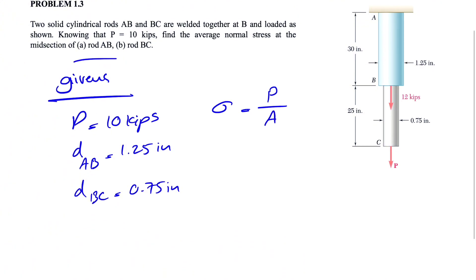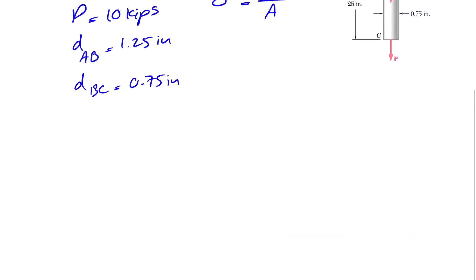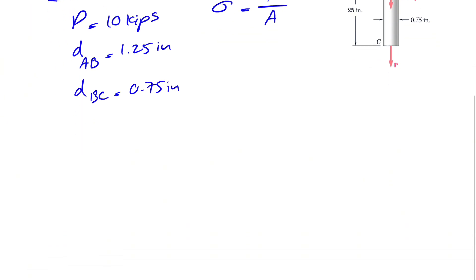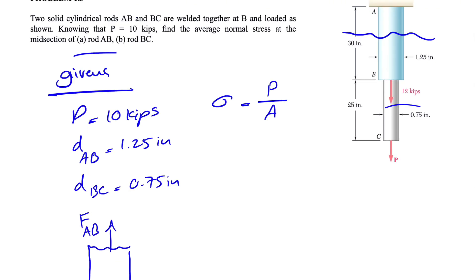So let's start with part A where we have to find the average normal stress at the midsection of AB. So if we draw the free body diagram, let's consider that as our section. The forces that we have in here is the force P, we have the 12 kips in here and let's call our force in here F_AB. So that's pretty much all the forces that we have, and that's our section.